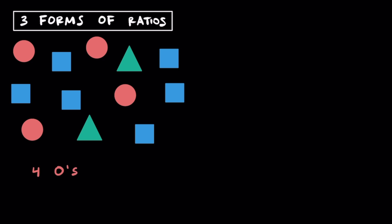Let's practice writing the forms of ratios. Here we have four circles, six squares, and two triangles. Ratios compare similar types of things, and we can write them in three different forms.